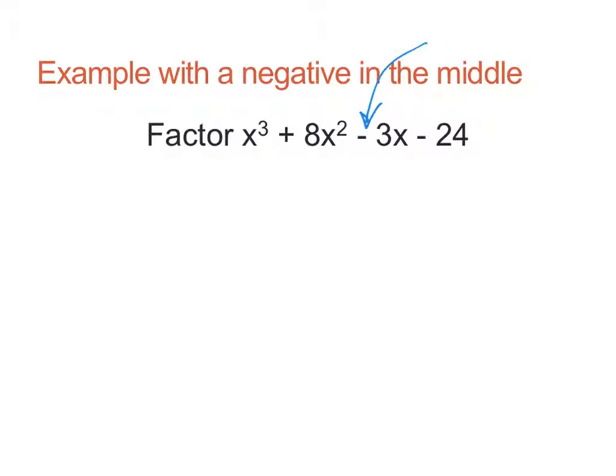And when I go to add the parentheses, I notice that x cubed plus 8x squared, I'm going to put a negative between my groups.